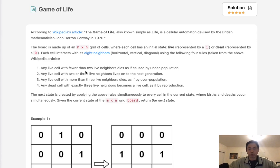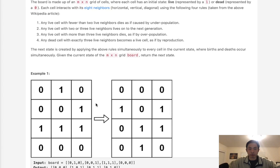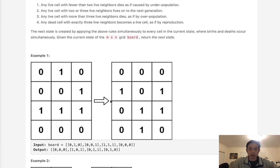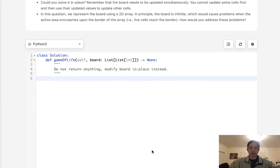Here are the rules. Any live cell with fewer than 2 live cell neighbors dies, so it turns from a 1 to 0. Any live cell with 2 or 3 live neighbors lives on, so that just stays as a 1. And any live cell with more than 3 live neighbors dies, as if by overproduction, so that also becomes a 1 to 0. Now any dead cell with exactly 3 live neighbors becomes a live cell, as if by reproduction. Alright, so we have these 4 rules here.